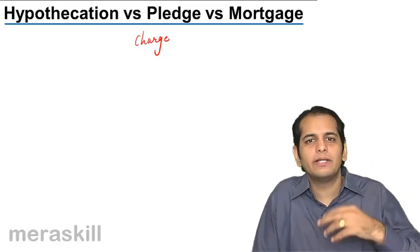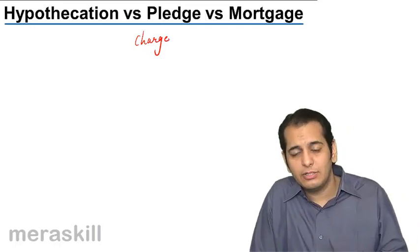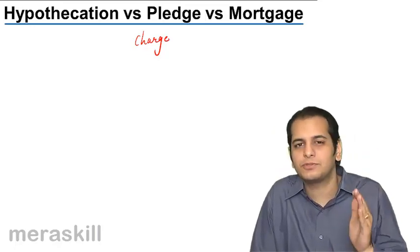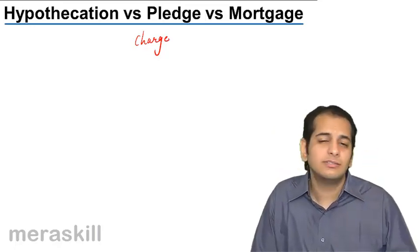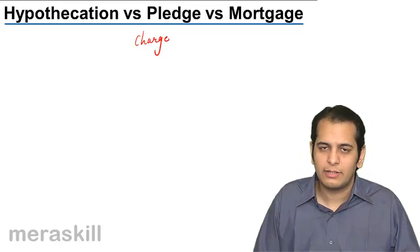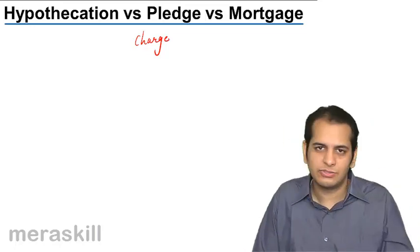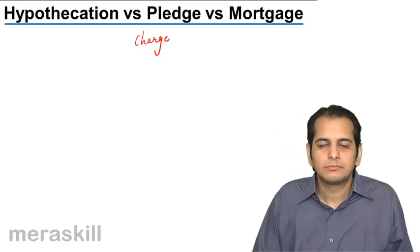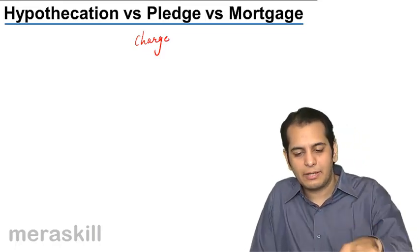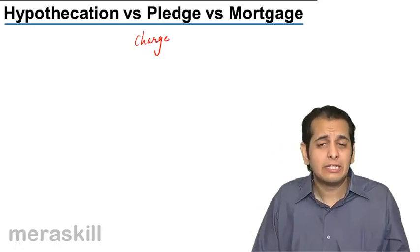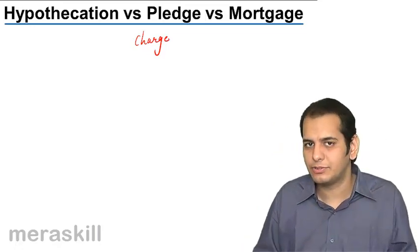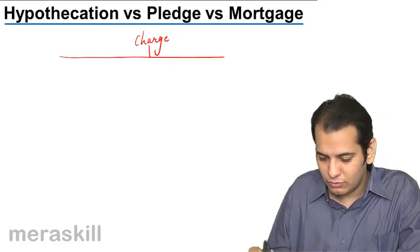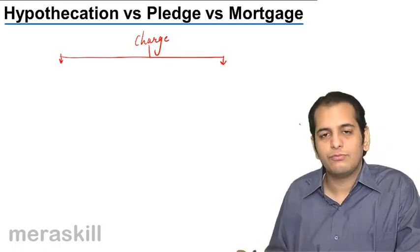If the title is clear, nobody can stop you. Here, though you have the ownership, there is an obstruction — a hurdle in selling the goods — and that hurdle is called a charge. This charge is of three types: first is hypothecation, second is pledge, third is mortgage. The difference between these three is the basis on which they are formed.